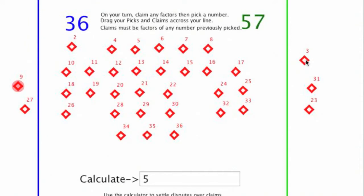There are no other factors of the numbers that have been pulled so far, so the blue team now gets to pick. If they pick 35, I get to claim on the green side, 7 and 5.